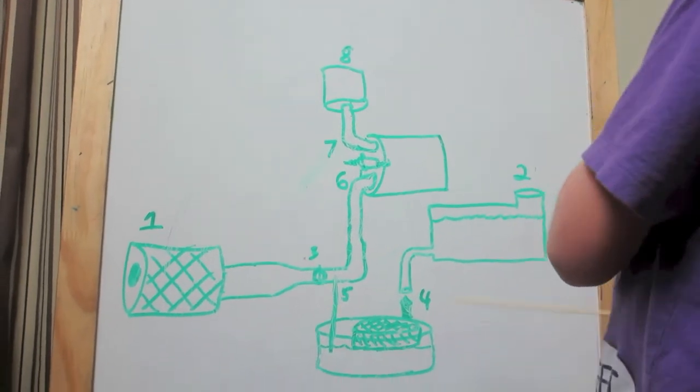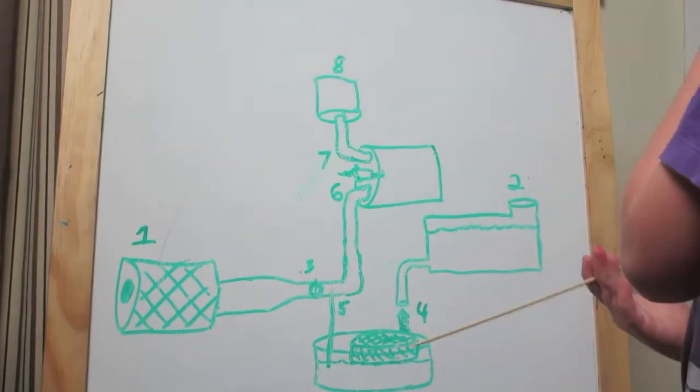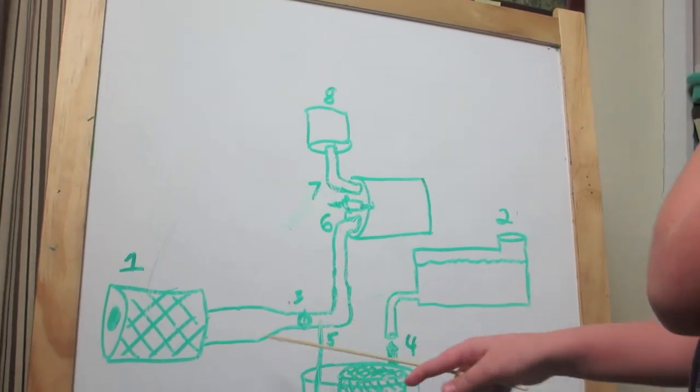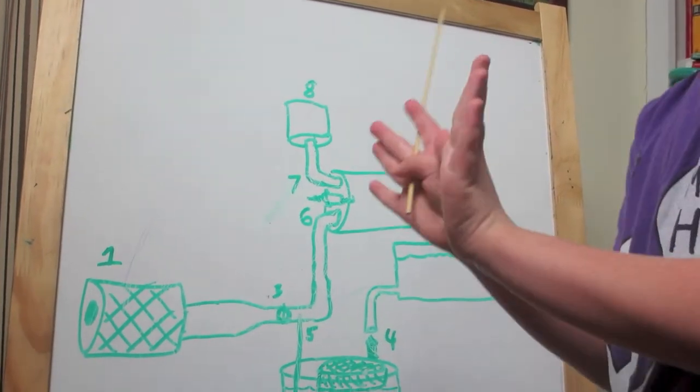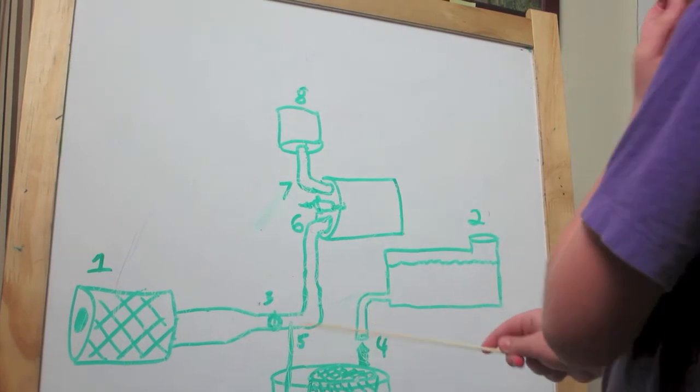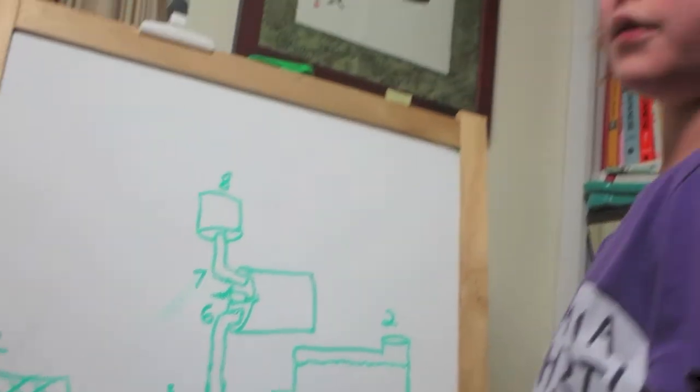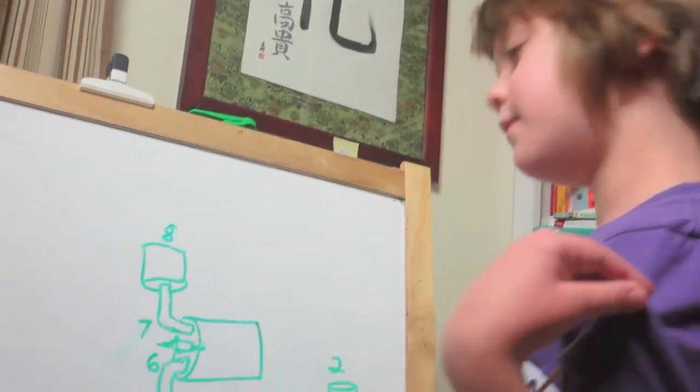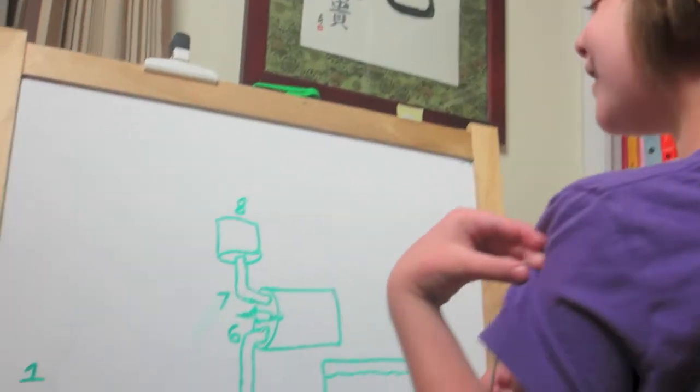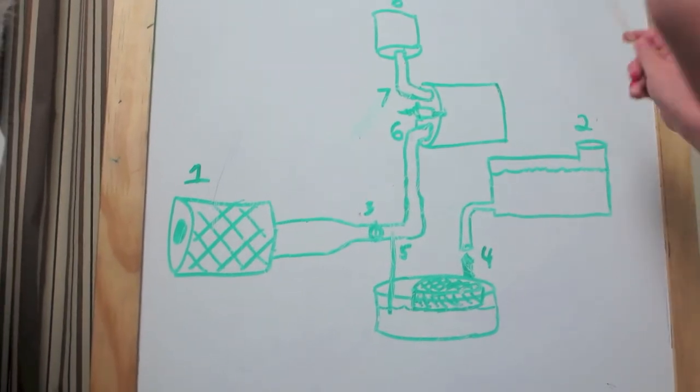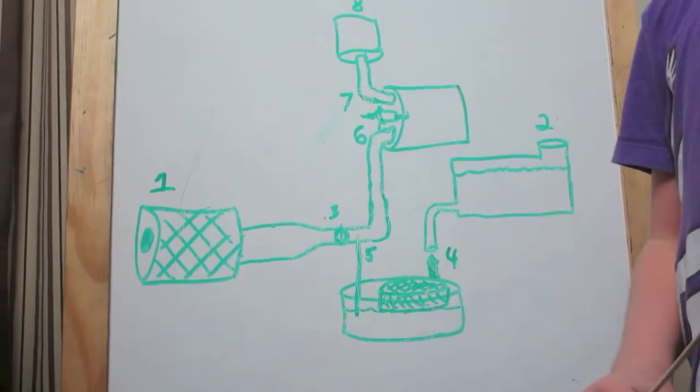Also the butterfly could get stuck, and then only a little bit of air could go in. Perfect amount of gas, but not enough air. That's another reason why there's not a perfect mixture. So those are the reasons it could break.